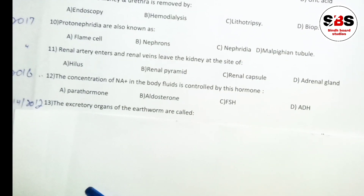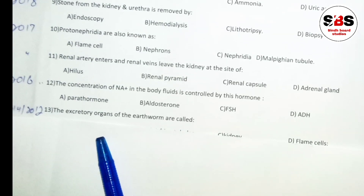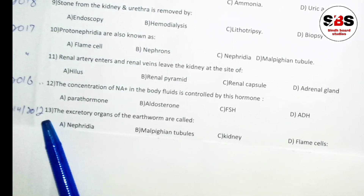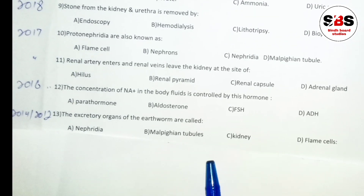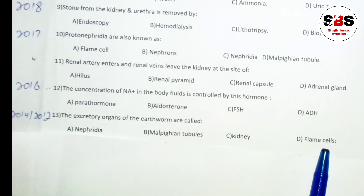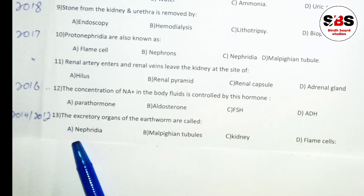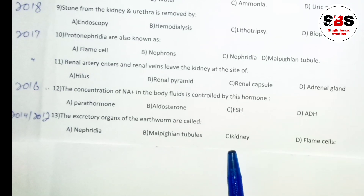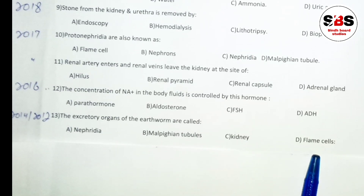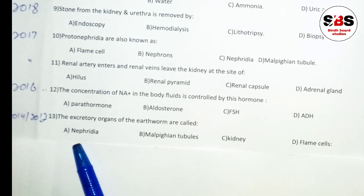Question number 13 (appeared in 2012 and 2014): the excretory organs of earthworm are called what? Options are nephridia, Malpighian tubules, kidney, or flame cells. Nephridia (also called metanephridia) are the excretory organs of earthworm. Malpighian tubules belong to cockroach, kidney is our body's organ, and flame cells (protonephridia) belong to planaria. The correct answer is nephridia or metanephridia.